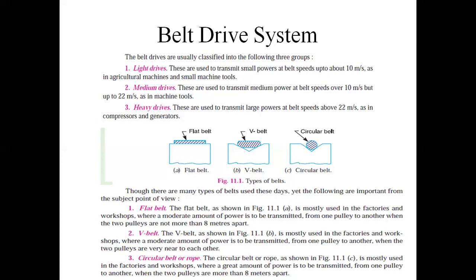This is the basic classification of the belt drive system. The belt drive system has different types of belts, and these belts are classified according to their cross-section. Here you can see the flat belt, where the cross-section is flat; the V-belt, where the cross-section is V-shaped; and the circular belt, where the cross-section is circular.